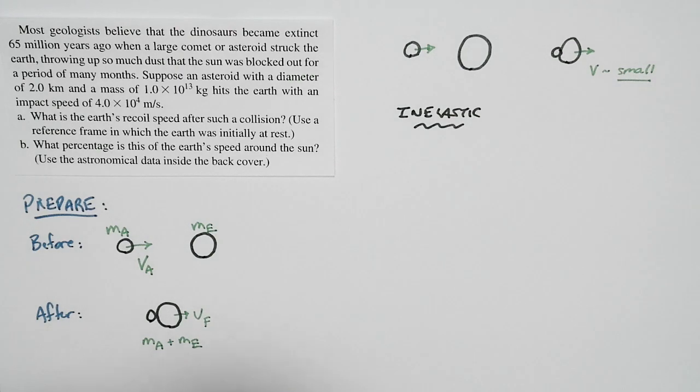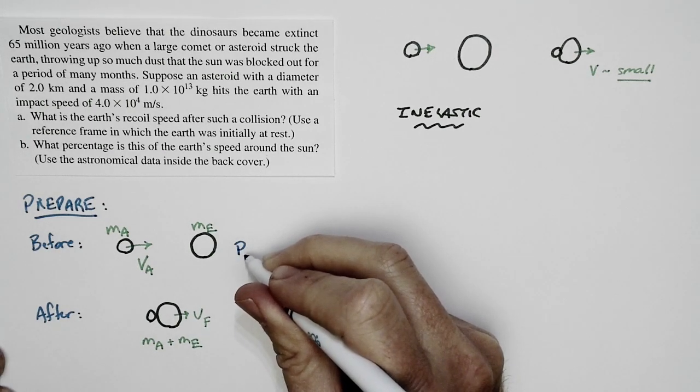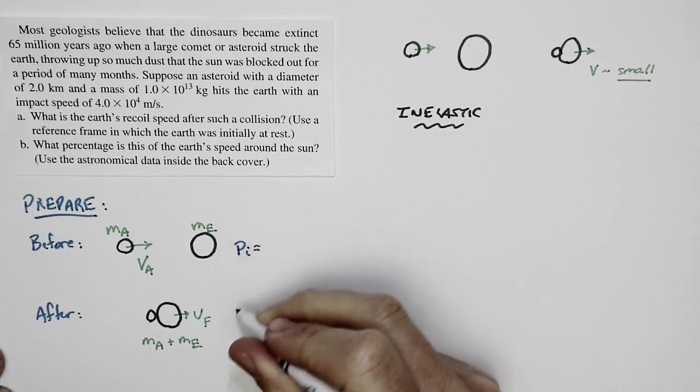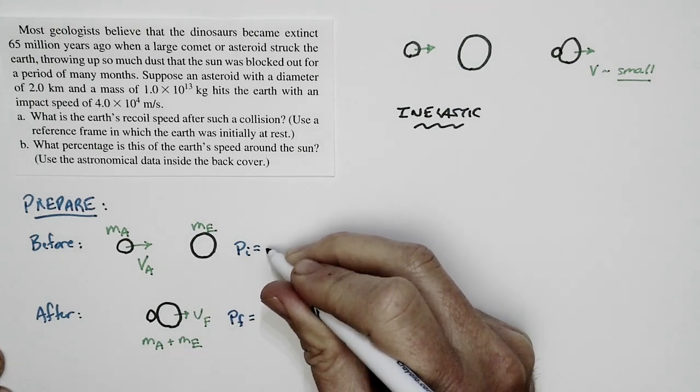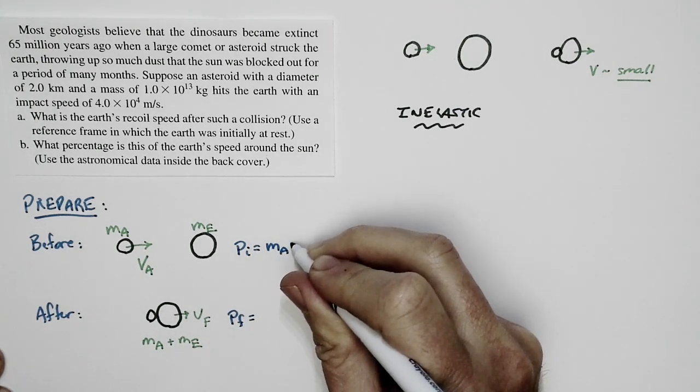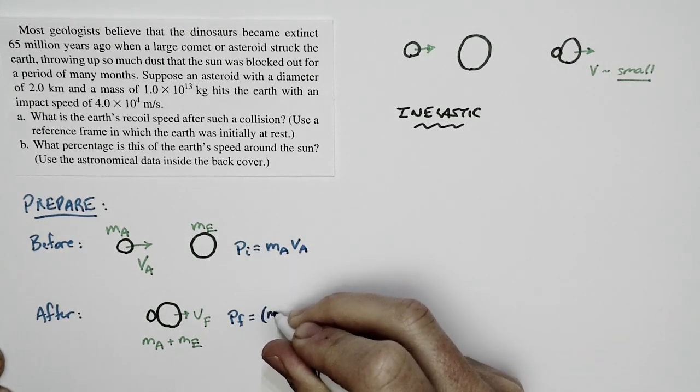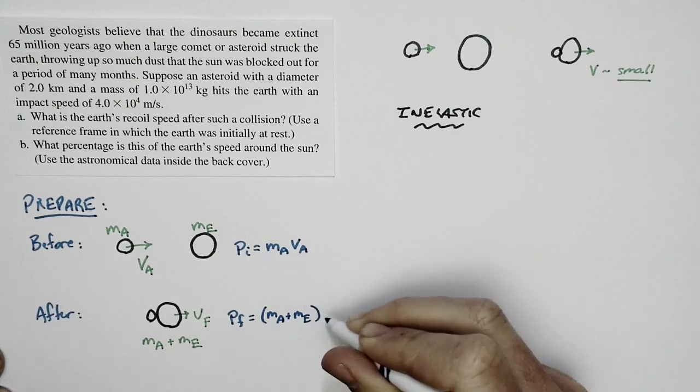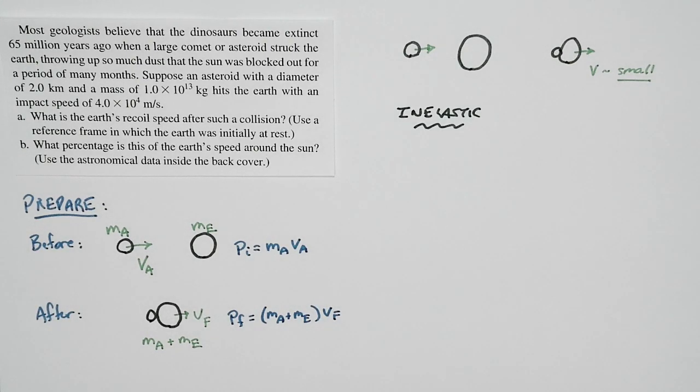Now, we can write down an expression for the momentum before, which we'll call PI. That's my initial momentum. And for the final momentum, which we call PF. PI is just the mass of the asteroid times the speed of the asteroid. PF is the combined mass, MA plus ME, times VF. That's my momentum after the collision.